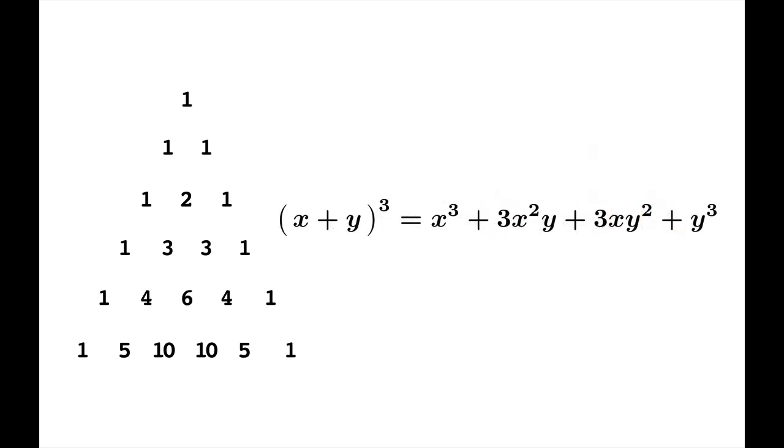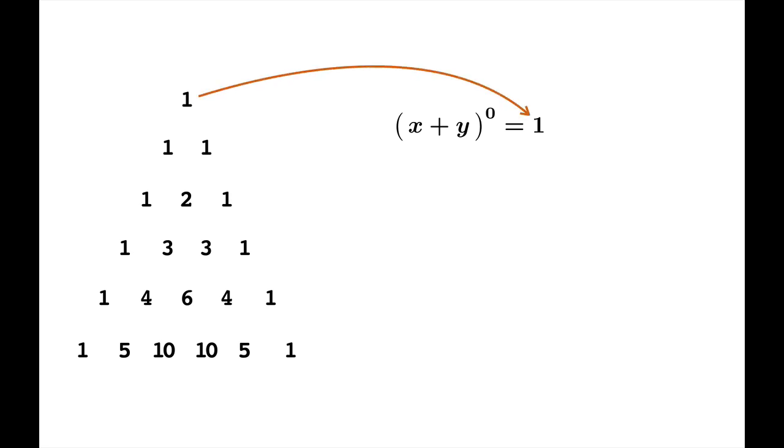If you look at x plus y cubed, you'll notice the same pattern for the next row. So there's one of these terms, three of these, three of these, and one of these. The pattern even works at the top of the triangle. So x plus y to the zero is one, and x plus y to the first power is just x plus y. And there's one each of the x and y terms.